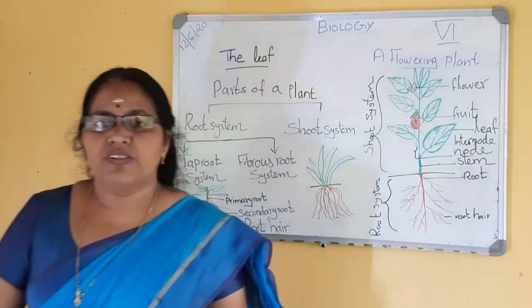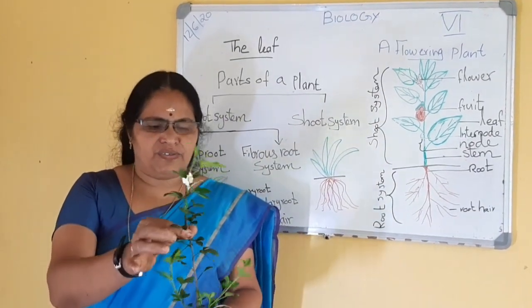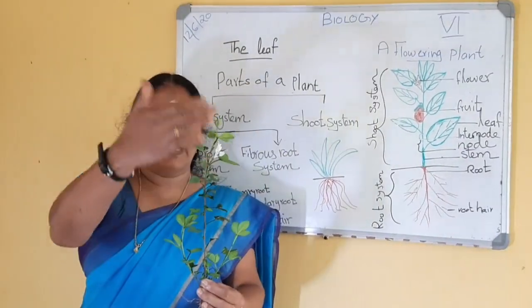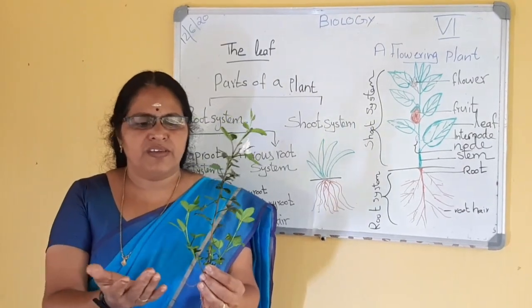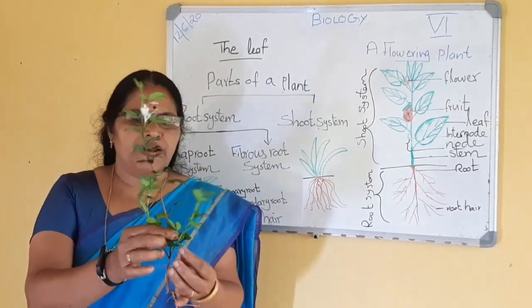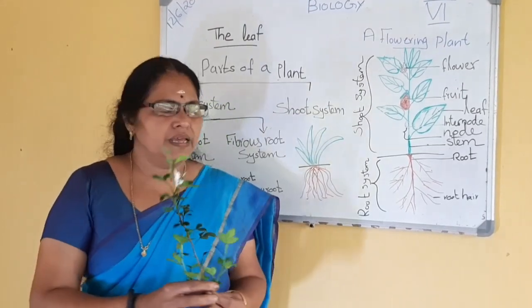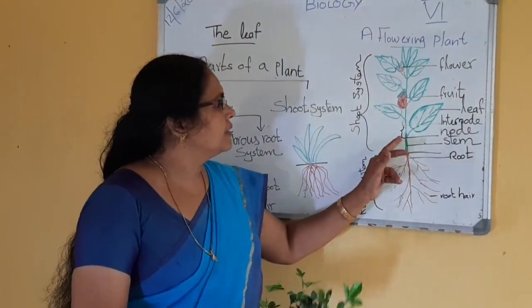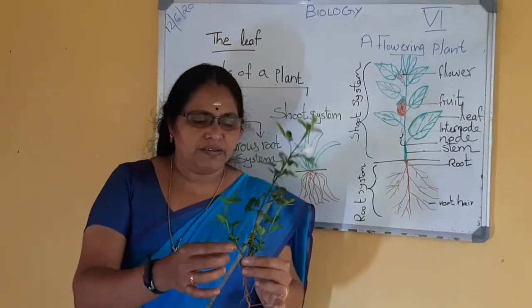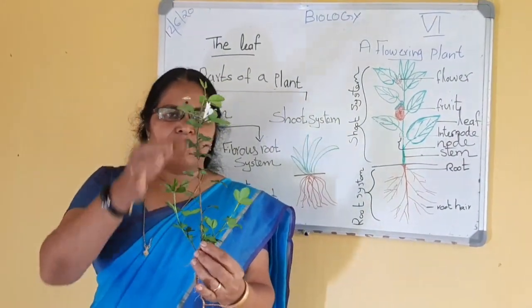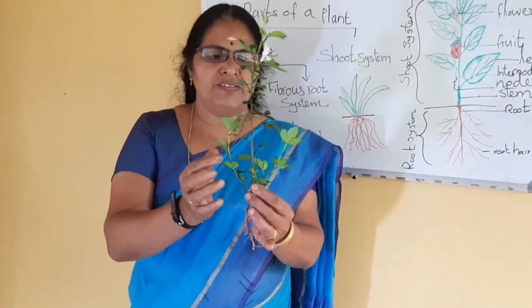The part of the plant which grows above the ground is called the shoot system. Here you can see a plant with flowers. The shoot system includes branches, leaves, flowers, and fruits. The stem is the main aerial part of the plant. From the stem arise many branches and leaves. Here you can see the stem producing the leaves.